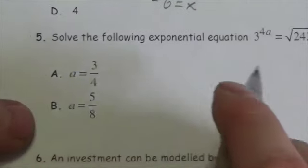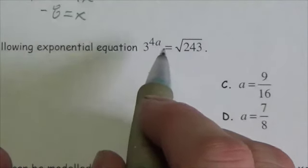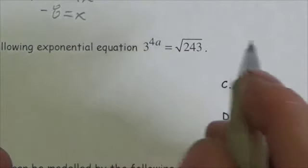All right, so this question asks us to solve the following exponential equation. We've got 3 to the 4a equals the square root of 243.